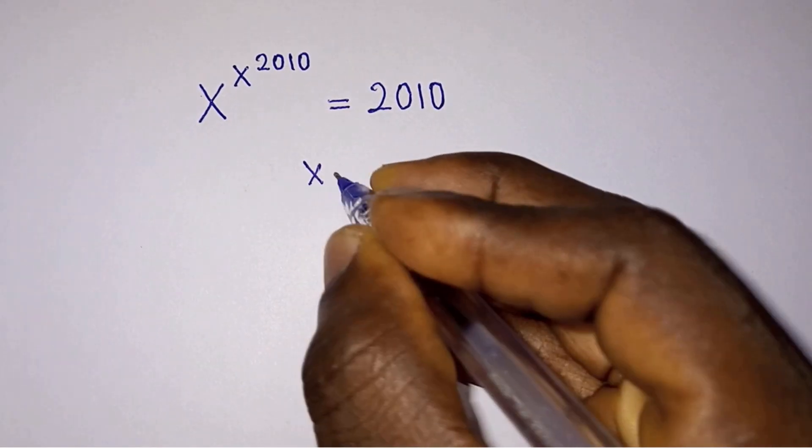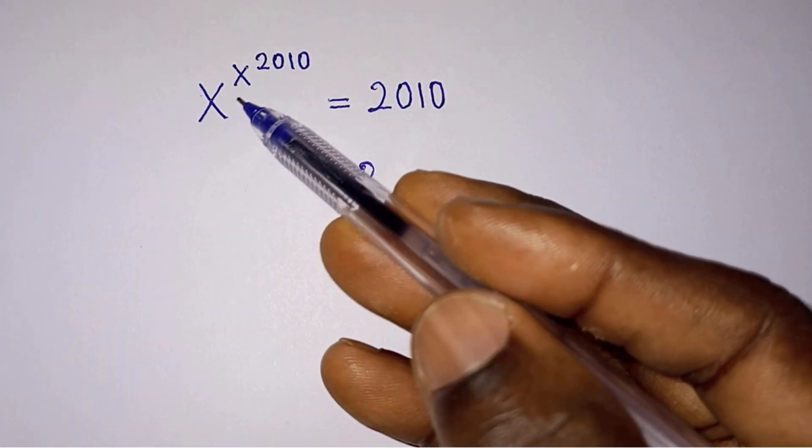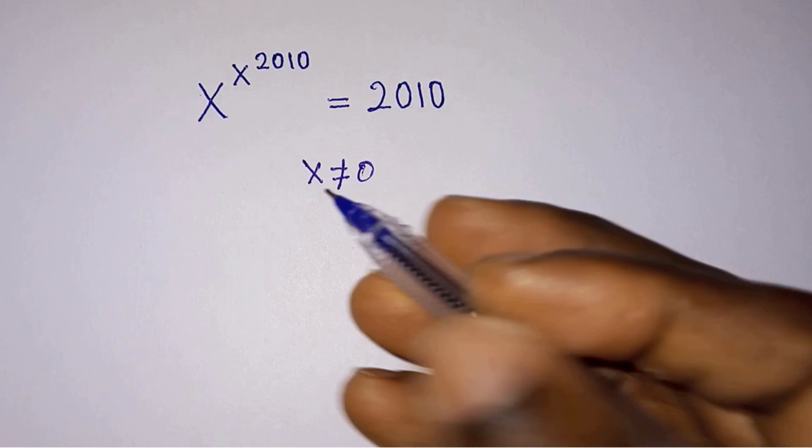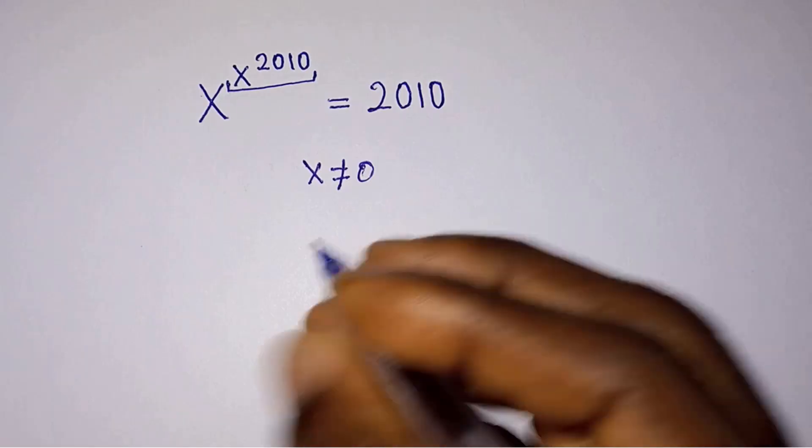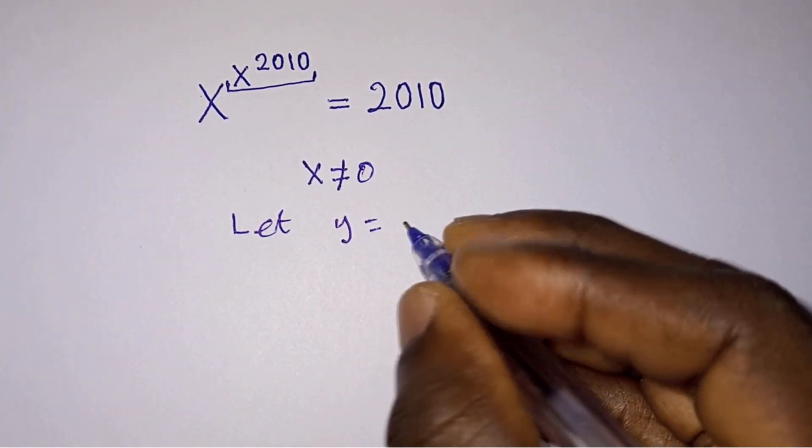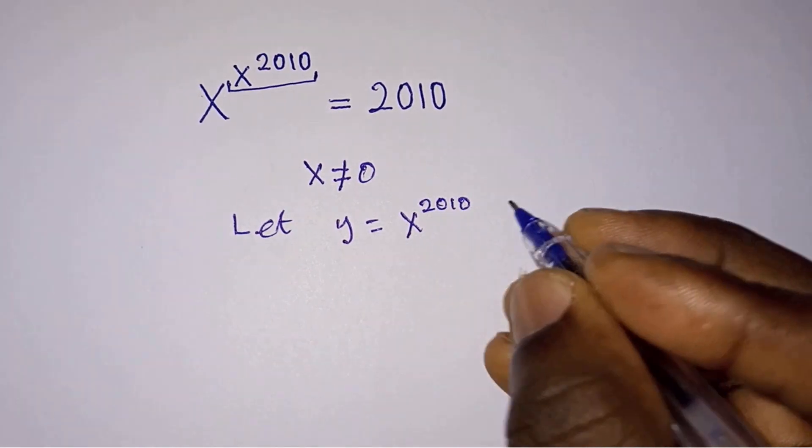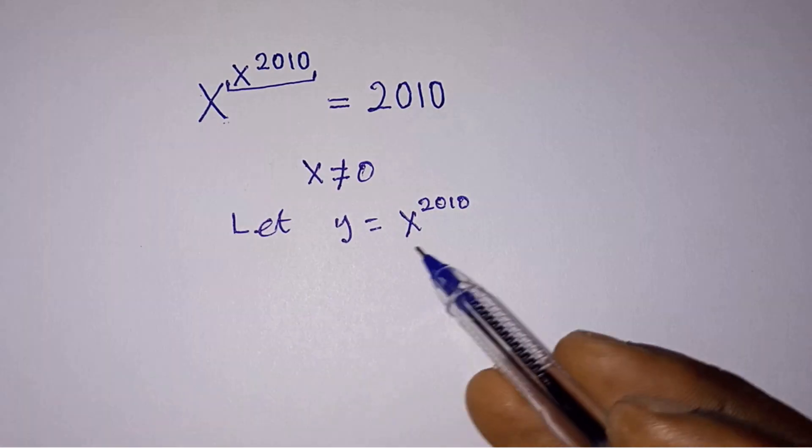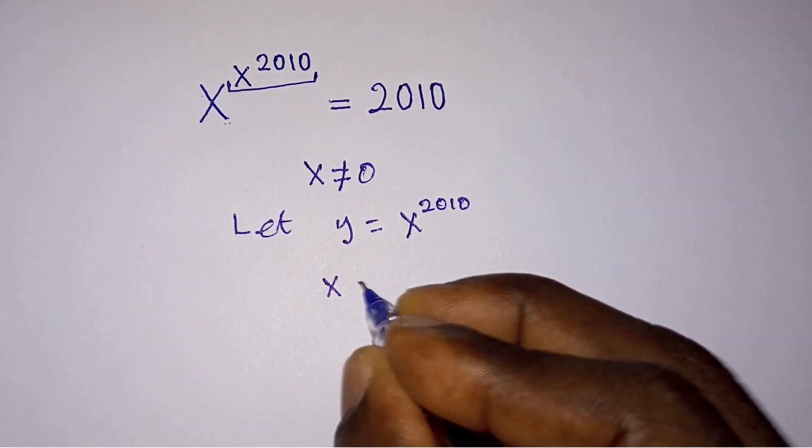First, since x is never equal to zero because of this x to the power x, then from here let's go ahead and let y equal to this power. So we have y is equal to x to the power 2010. To get this x, let's make x the subject from this equation.